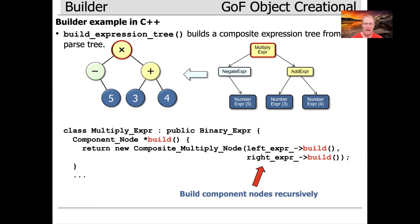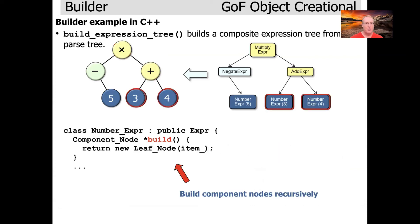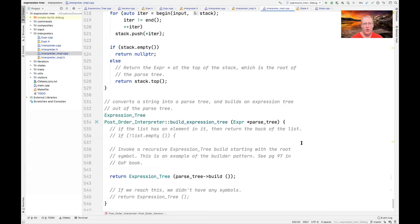Notice how everything comes back as a component node pointer, and that's just the magic of object-oriented programming and inheritance. So that's how the build process works recursively to kick things off, and we end up creating a composite expression tree when we're all done.